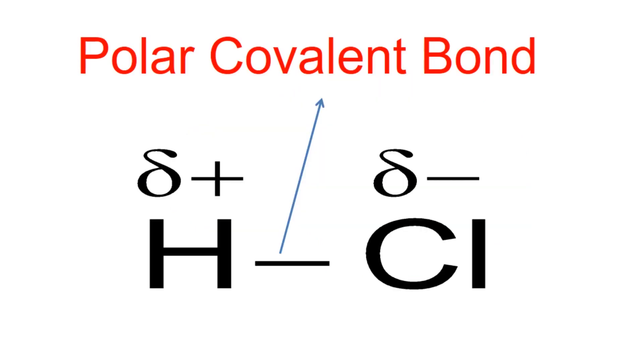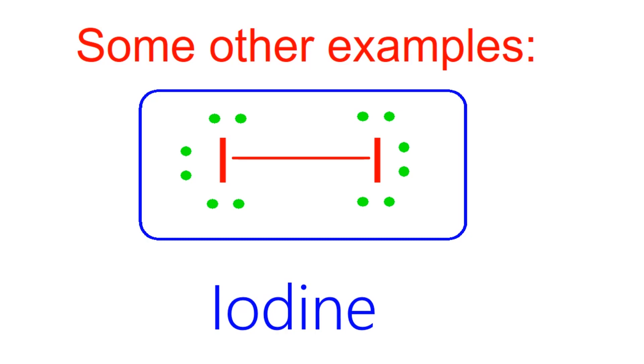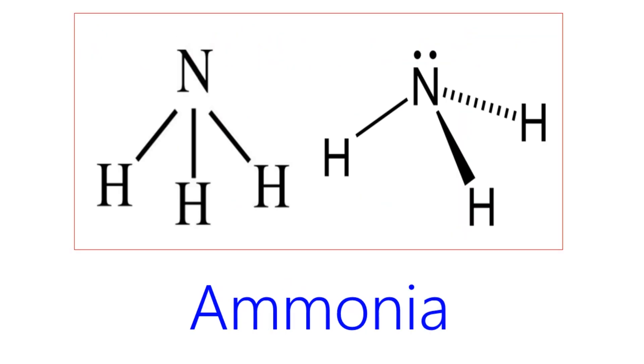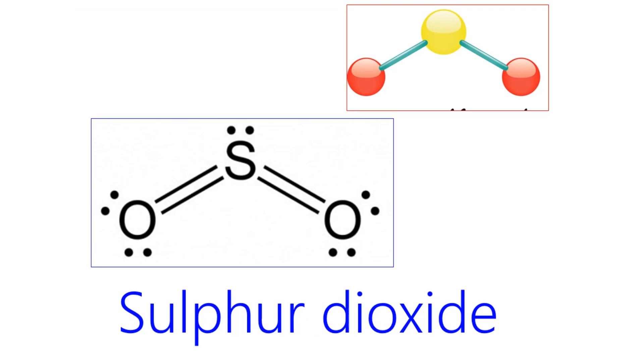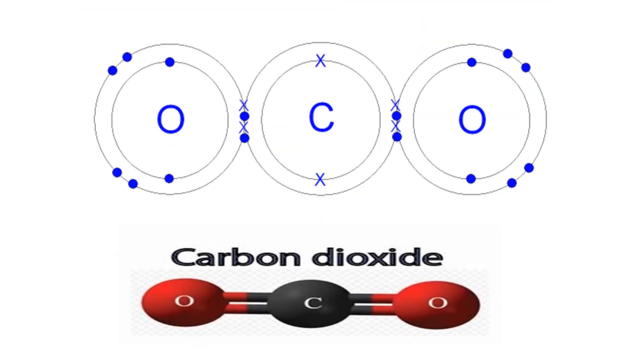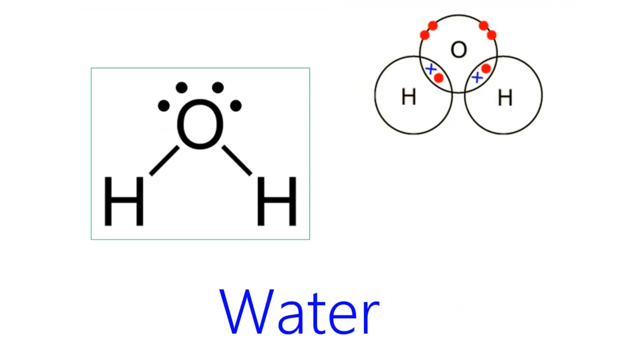This is an example for polar covalent bond. Some other examples of covalent bond are iodine, ammonia, sulfur dioxide, carbon dioxide, phosphorus trichloride and water molecules.